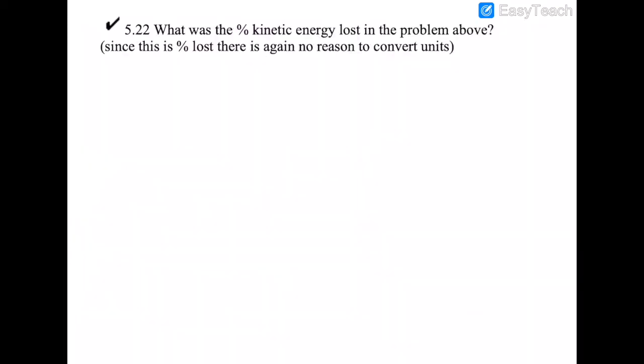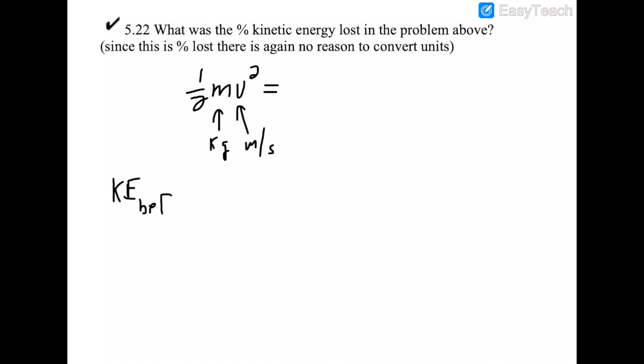The follow-up question asks for the percent kinetic energy lost in the collision. Again, since it's a percentage, there's no need to convert units. Kinetic energy is ½mv², which requires kilograms and m/s for joules, but because we're computing a ratio, the weird units (tons and mph) appear on both sides and cancel.